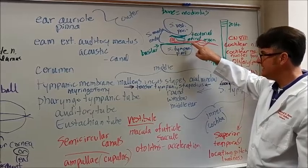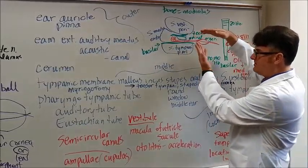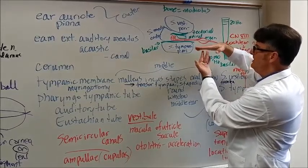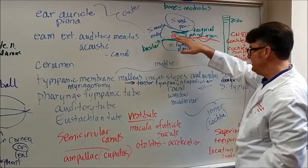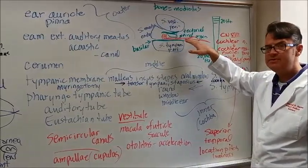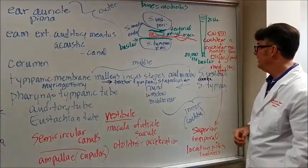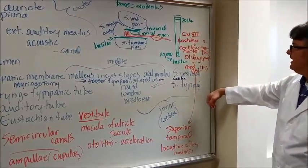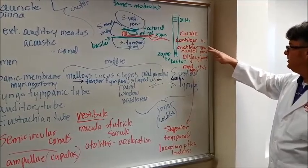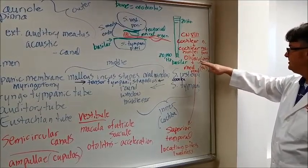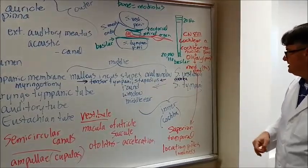Now, interestingly enough, when the sound goes through this scala vestibuli, scala tympani area, it's going through the cochlea. There is a basilar membrane inside of the cochlea. And what happens is there's a tectorial membrane that sits on top of these hair cells. And as these hair cells are stimulated, then this is the cochlear portion, the hearing portion that is then transmitted back through cranial nerve 8, cochlear nerve.